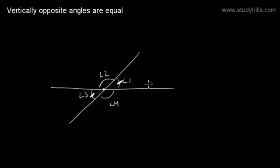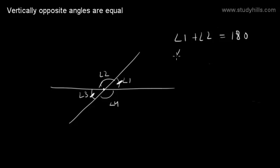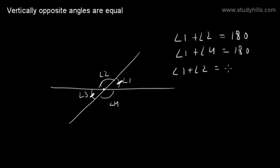Similarly, we can prove for Angle 2 and Angle 4. We know Angle 1 plus Angle 2 is 180. And Angle 1 and Angle 4 are on the same line, so the sum of Angle 1 and Angle 4 is also 180. So we can say Angle 1 plus Angle 2 is equal to Angle 1 plus Angle 4. Therefore, Angle 2 is equal to Angle 4.